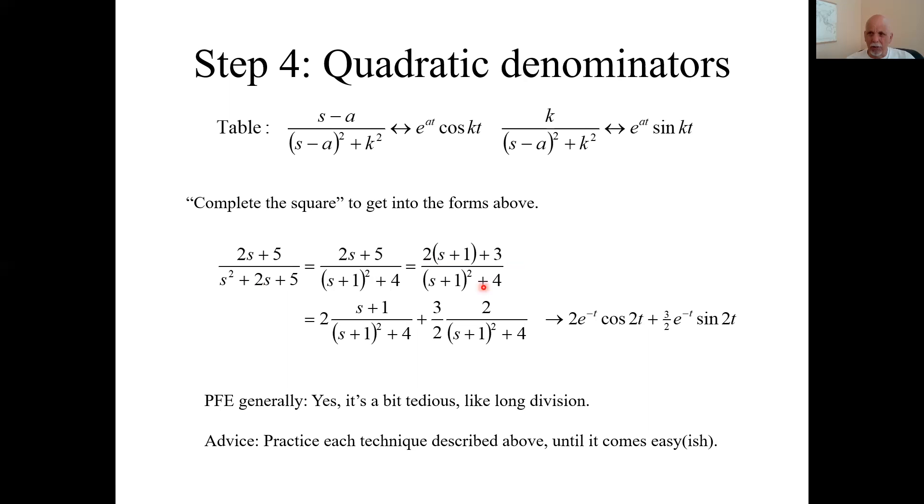Now I can split the whole thing up. Bring the two out front, and then I have the s plus one over that denominator. That matches this format. K is minus one in this case. K is two.